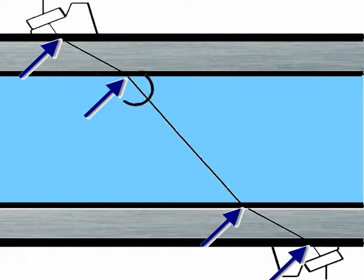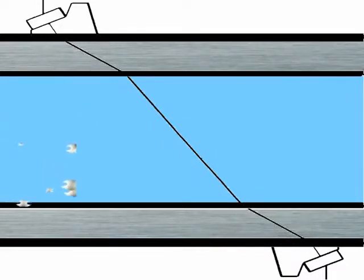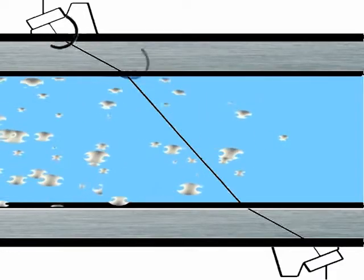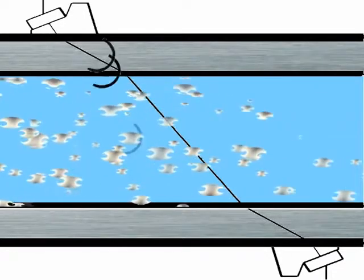This refraction angle is a function of the speed of sound in each of the materials. We also have to ensure that none of the materials through which this ultrasonic signal passes excessively attenuates or disperses the ultrasonic signal.